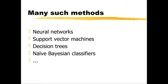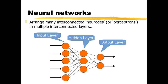There are many, many such methods, including neural networks, support vector machines, decision trees, naive Bayesian classifiers — there are lots and lots of them. But neural networks are quite an interesting example because they borrow from ideas about how the brain works.